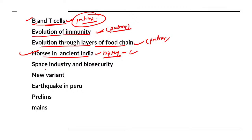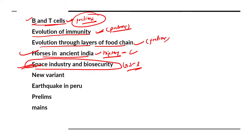Space industry and biosecurity is a very important GS Paper 3 topic. A new research has come out about how the space industry may hamper biosecurity overall. There are new variants, and articles will keep coming on this important topic.